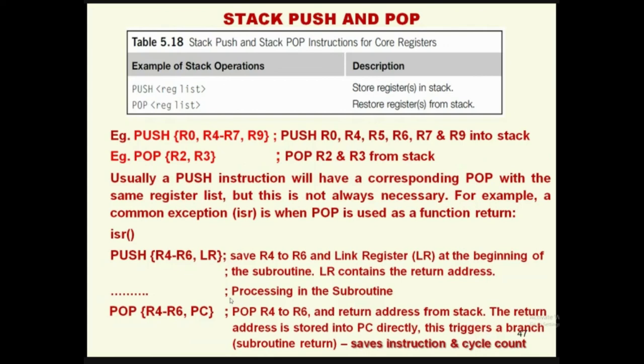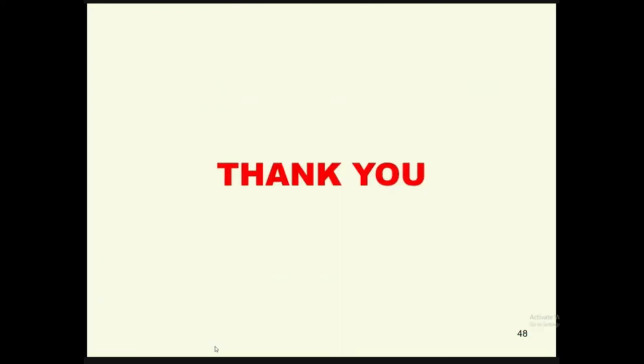With a single PUSH instruction you can push approximately 16 registers, and after completing the subroutine POP up to 16 registers in a single instruction. If a subroutine is called at least 10,000 times per second, you need 10,000 pushes and 10,000 pops — using multiple-register push and pop saves many instructions and cycle counts. Every ISR can get executed several thousand times per second, so these instructions are very useful for increasing speed and saving instruction count.